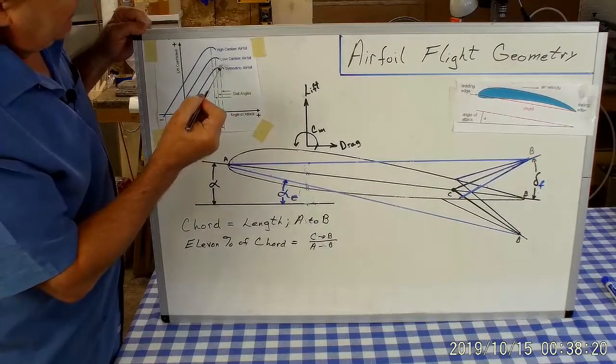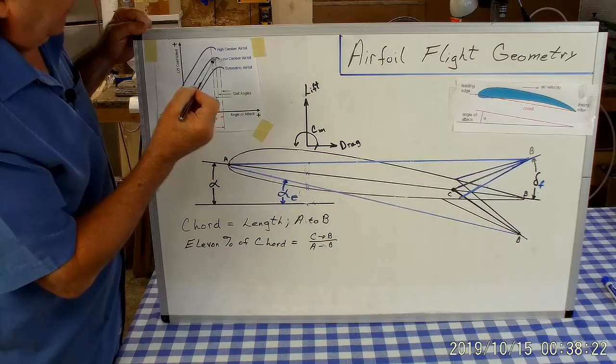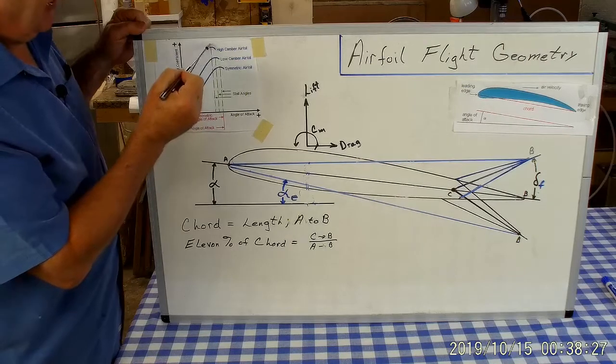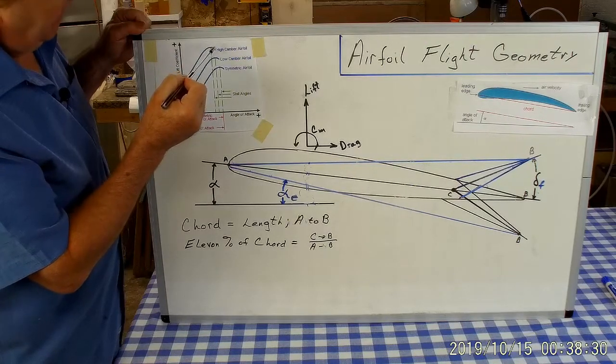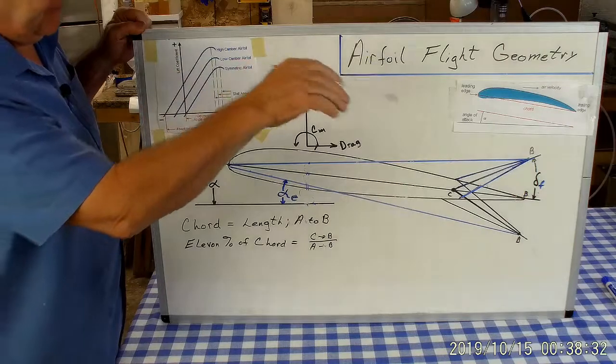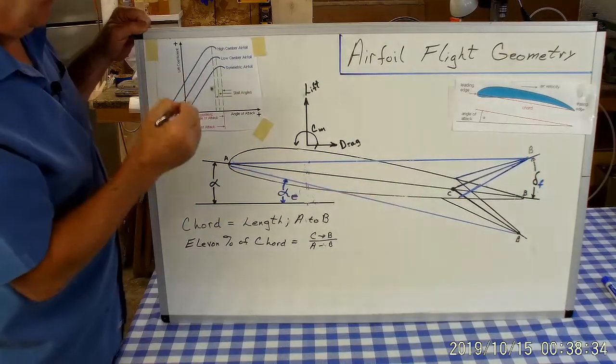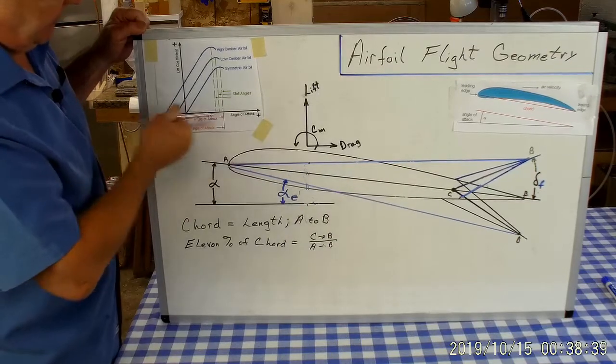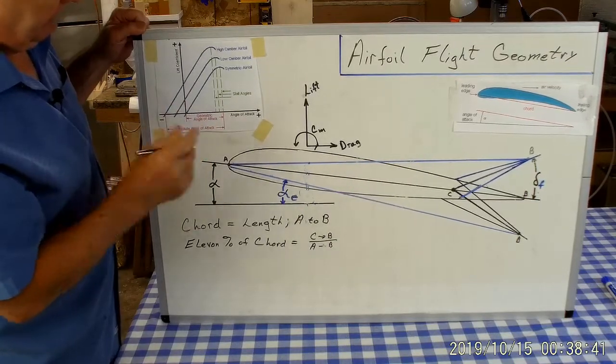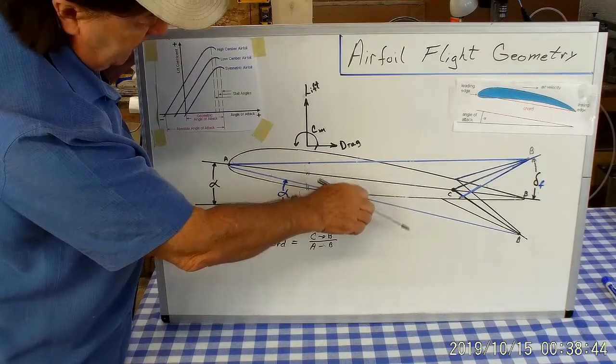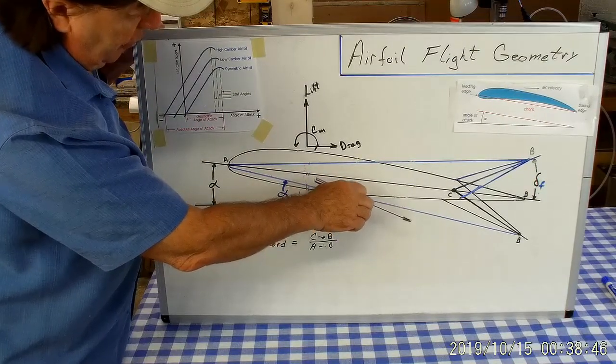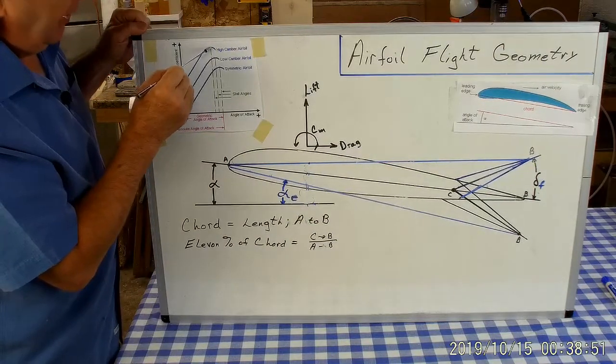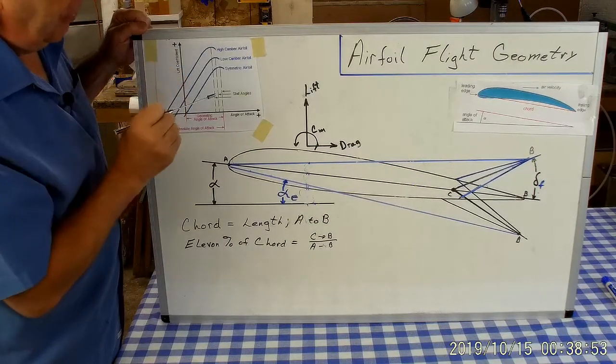Now an interesting thing happens in the whole process here. As this stall point on the curve moves aft, as this curve moves aft, you're actually able to get more lift because you cambered. However, the stall angle of attack is reduced, and that's because we're shifting the curve this way on the graph as this camber line tilts down. We can pull a higher CL, higher coefficient of lift, but stall point is at a lower angle of attack. It's very important to remember for later.